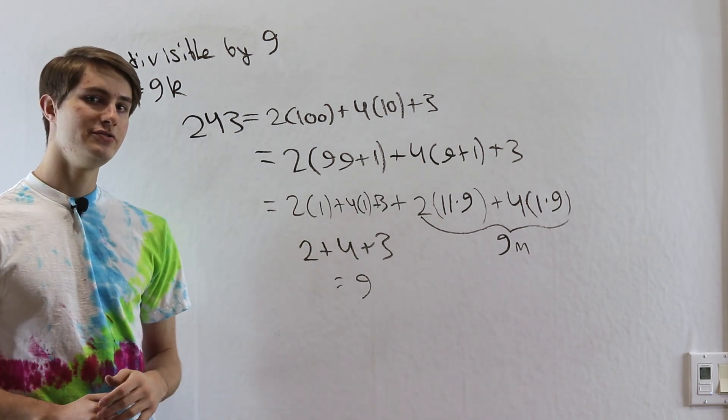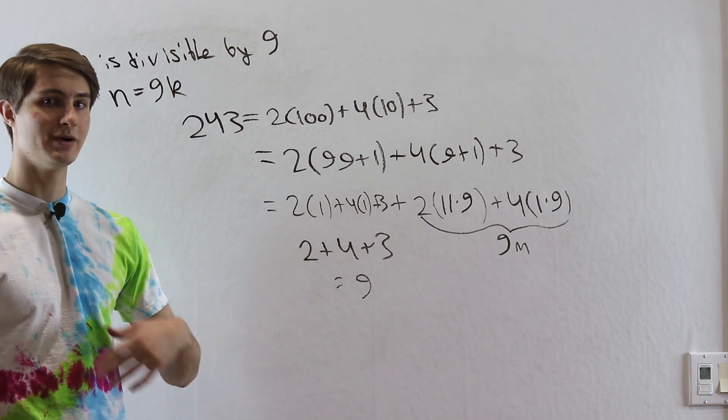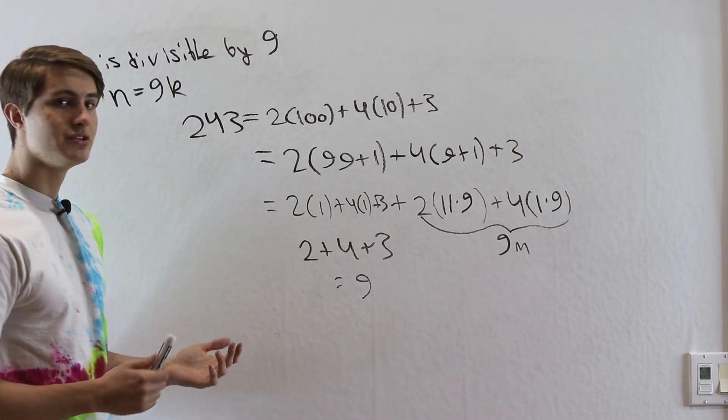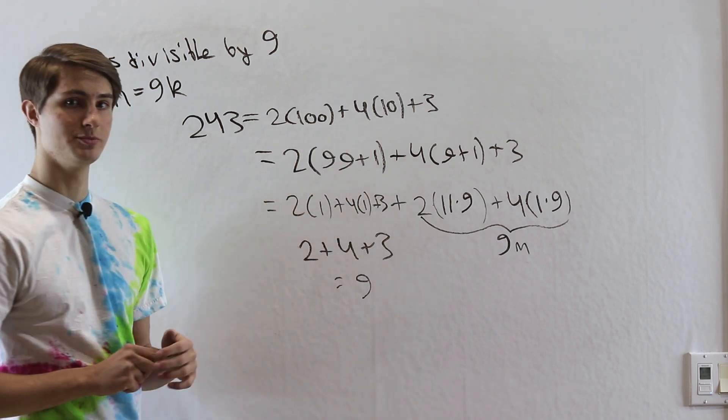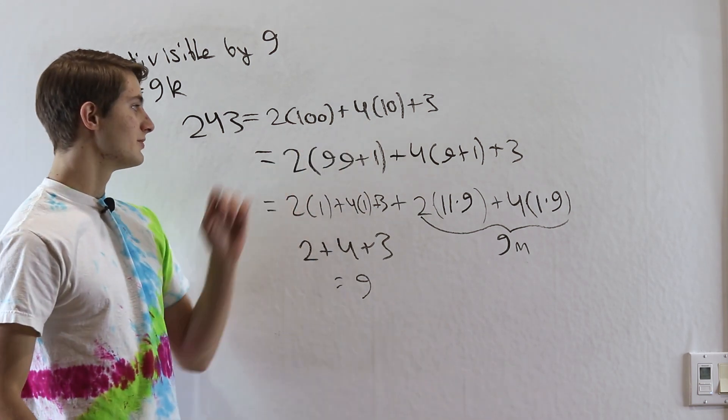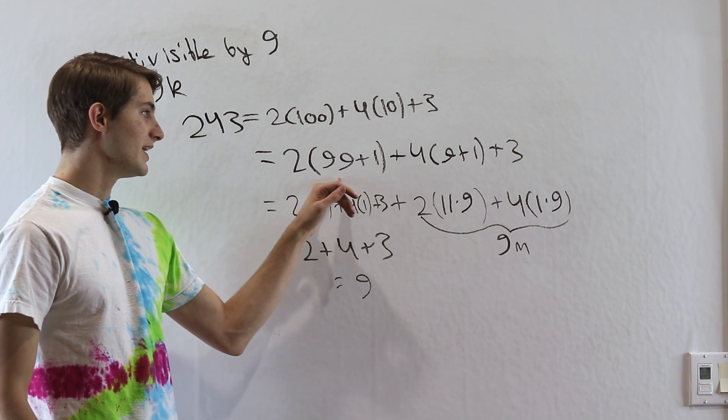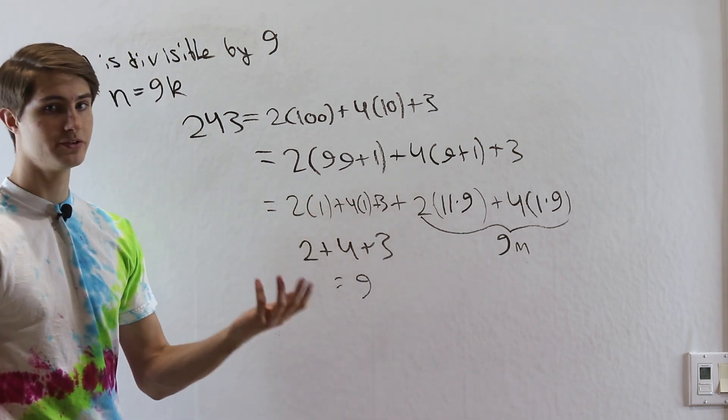So that is the trick for figuring out whether a number is divisible by 3 or 9. The reason adding up the digits works is because each digit represents a multiple of 10. Any multiple of 10 is going to be a multiple of 9 plus 1, or a multiple of 3 plus 1.